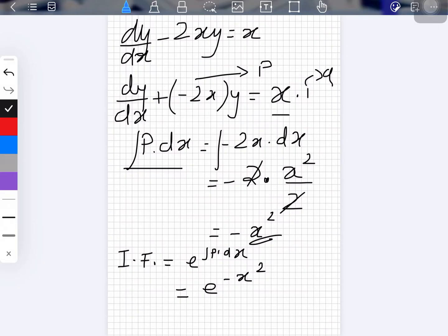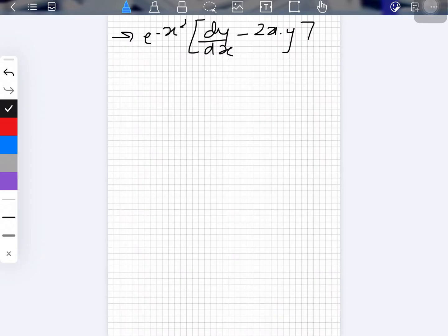So now what we will be getting is we'll be multiplying the integrating factor and the original equation. Sorry if the dog is barking or disturbing you, but let's continue with the question. We are going to multiply the integrating factor and the original equation. So that way what we will get is e^(-x²)[dy/dx - 2xy] = xe^(-x²).